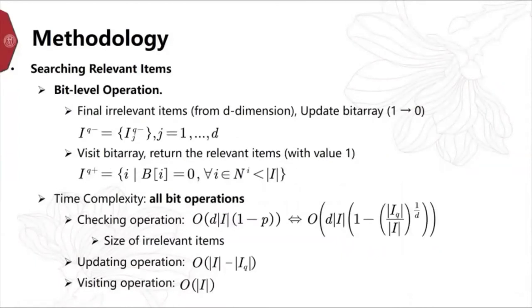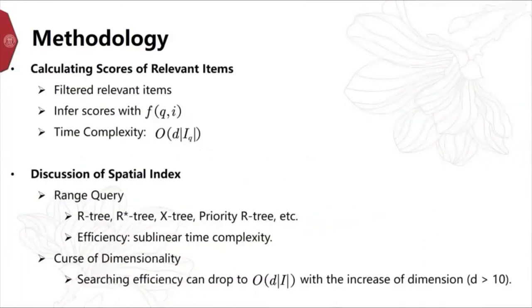For each irrelevant item, we check the value of the corresponding position in the bit array B, and update the value to 0 if the current value is 1. Then we can visit the whole bit array to return the relevant items IQ, which has the value 1. After we return a small set of relevant items, we can infer the scores S(Q,i) through inputting the query box and each item box to our model. The final ranking list is produced according to the score.